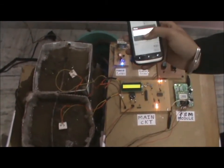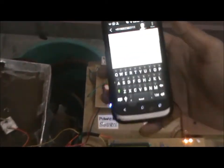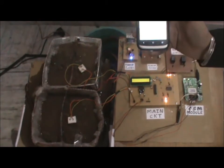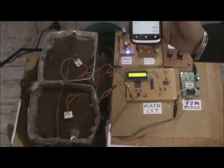Now, to switch off the motors, we will send the command hash off. Again, as the off message is received by the circuit, both the motors are switched off.